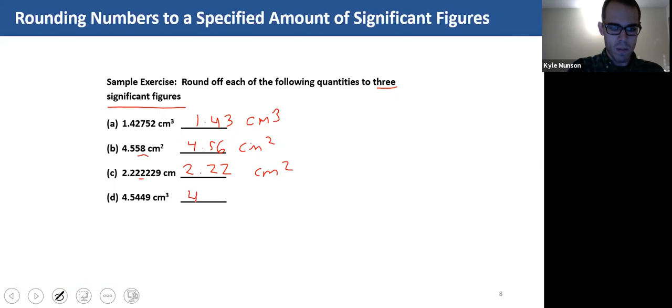Finally, 4.54 centimeters cubed. Again, that four is less than five, so we're going to leave the digit before it unchanged.